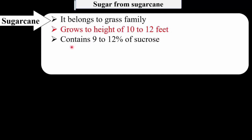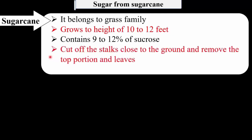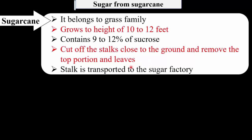Sugarcane contains about 9 to 12 percent sucrose. Agricultural laborers cut the stalk close to the ground, remove the top portion and leaves, and the remaining stalk is then transported to the sugar factory.